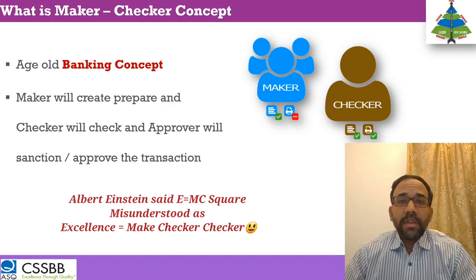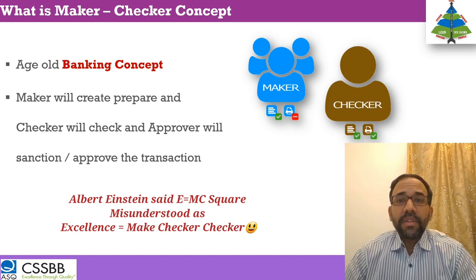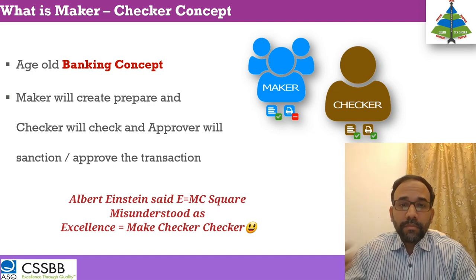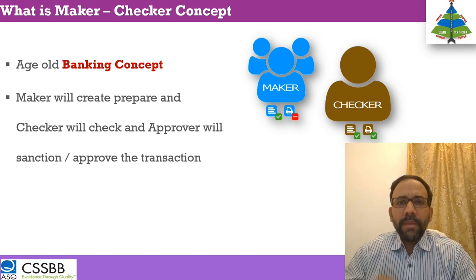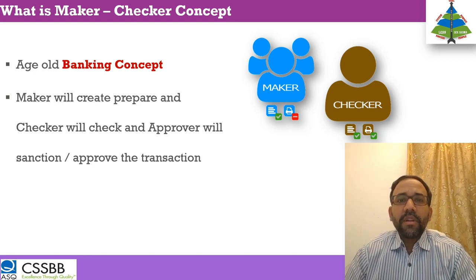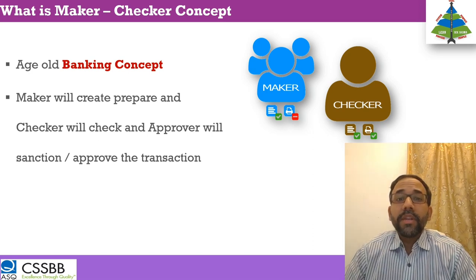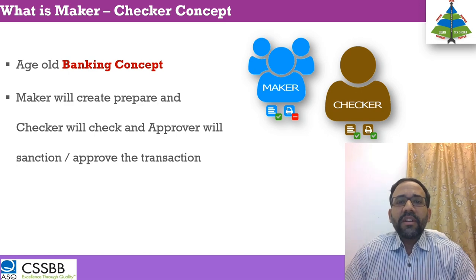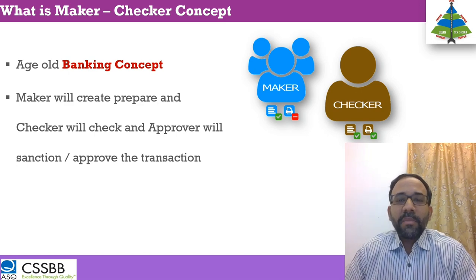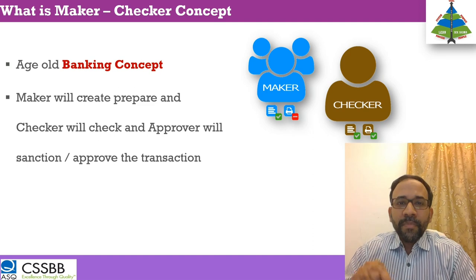One example is the banking sector — this concept came from banking and a lot of automation exists, but they still have the maker-checker concept. The primary reason I picked up this principle is the latest goof-up by Citibank: the erroneous transfer of 900 million US dollars to lenders instead of 8 million US dollars. This is the biggest blunder in the history of banking transactions. This is exactly why maker-checker will not ensure process quality.